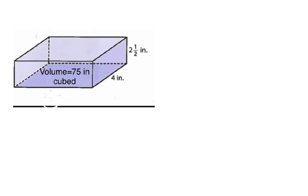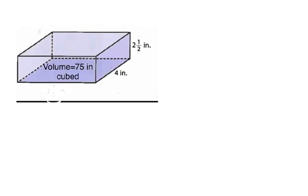Okay, let's take a look at this rectangular prism. So, here you see that the volume is given to us. So, the volume is 75 inches cubed. And then we have a width of 4 inches. We have a height of 2 1⁄2 inches. What we don't have is a length. So, we do not know what the length of this rectangular prism is. So, that's what we're going to solve for here.